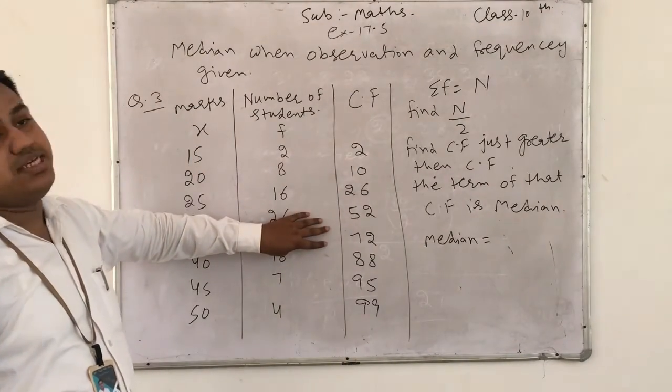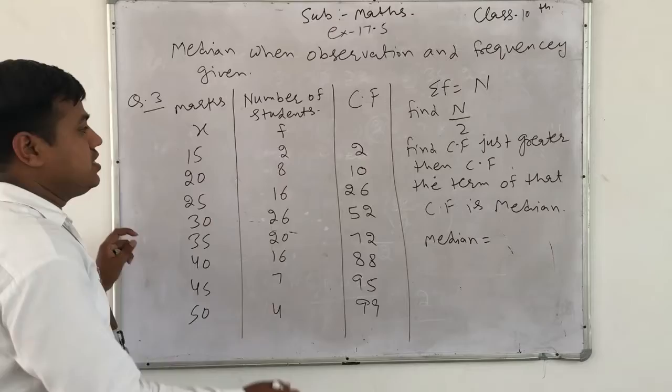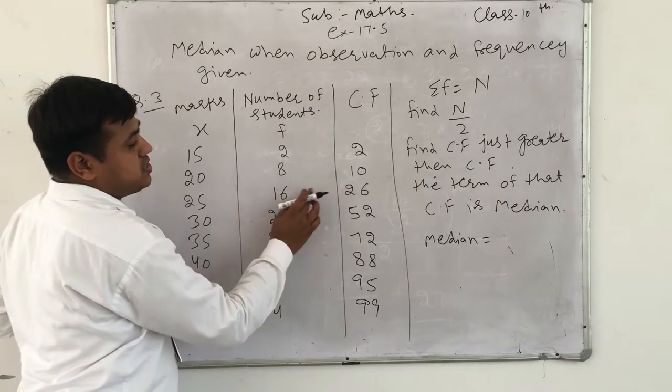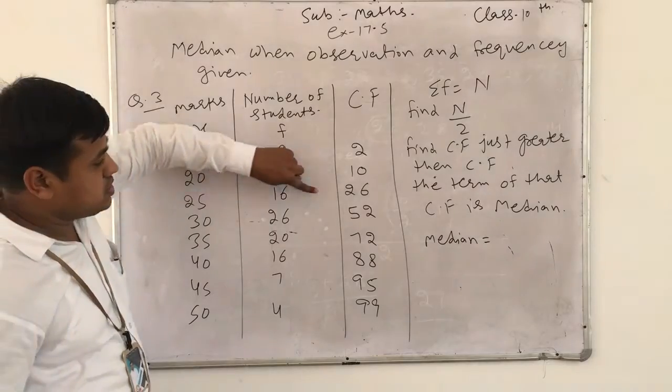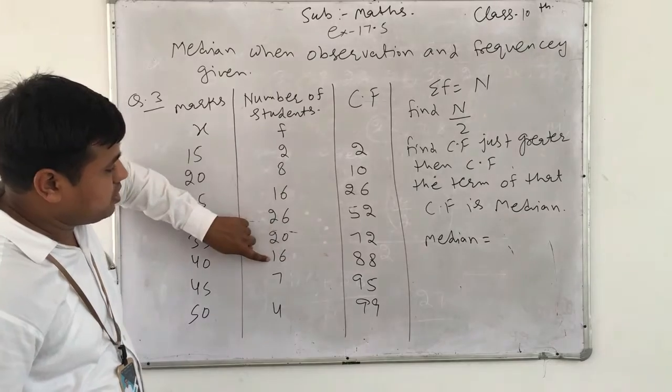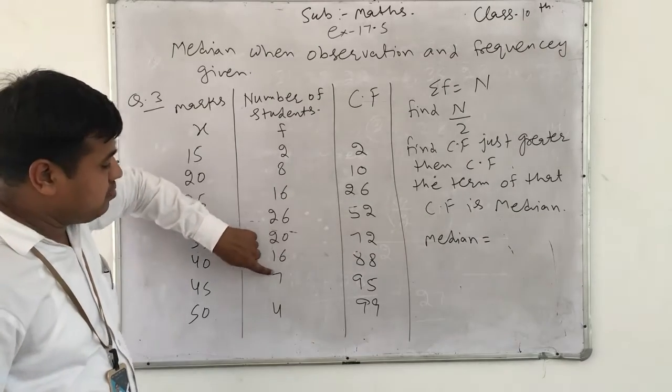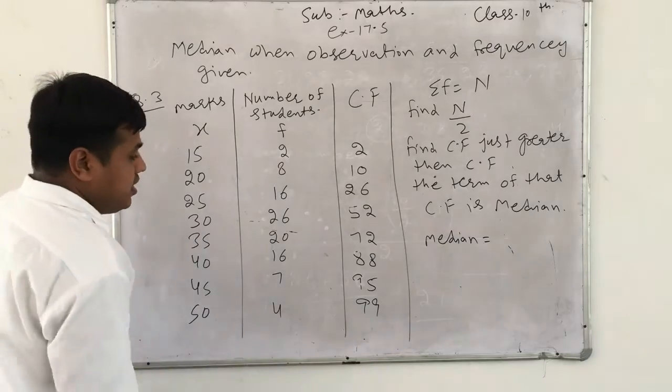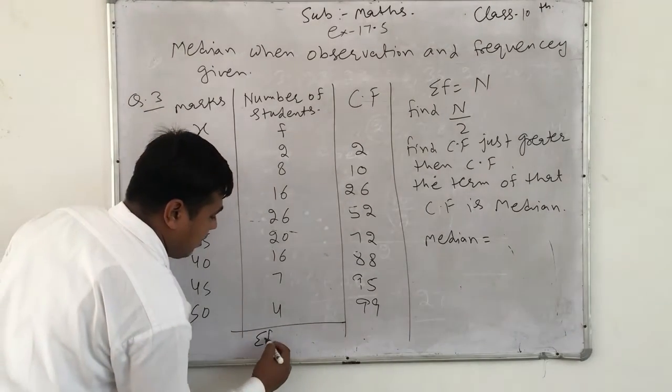So by this method we will find CF. Let's see again: 2 means 2, 2 plus 8 is 10, then 10 plus 16 is 26, 26 plus 26 is 52, 52 plus 20 is 72, 72 plus 16 is 88, 88 plus 7 is 95, and 95 plus 4 is 99. Here we get the summation of f.